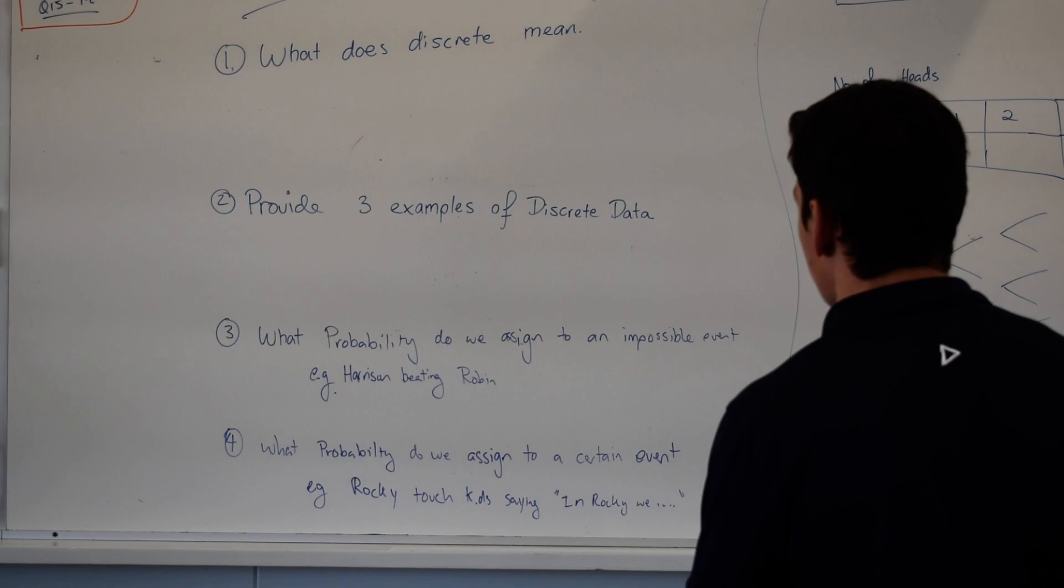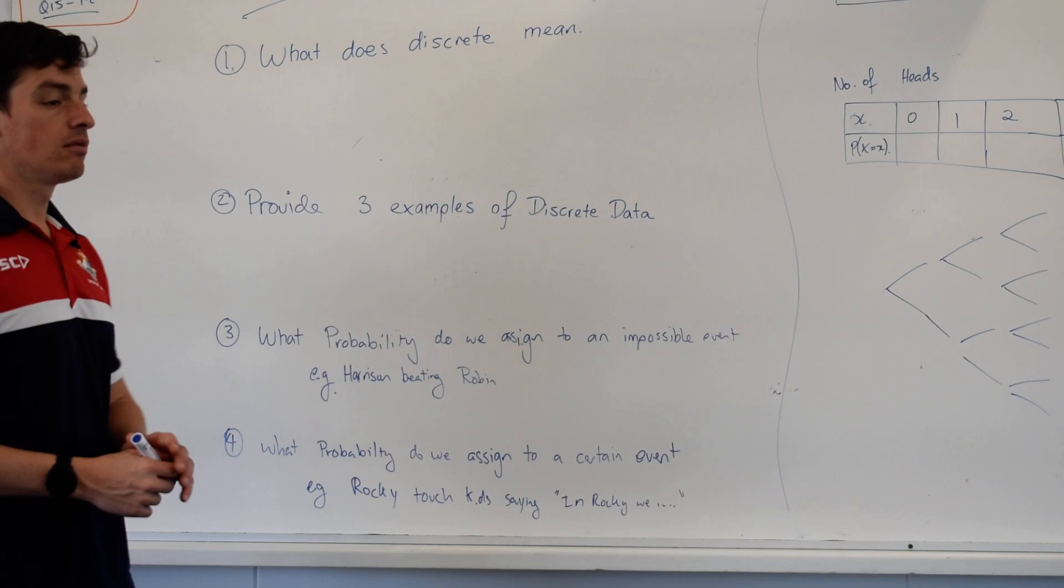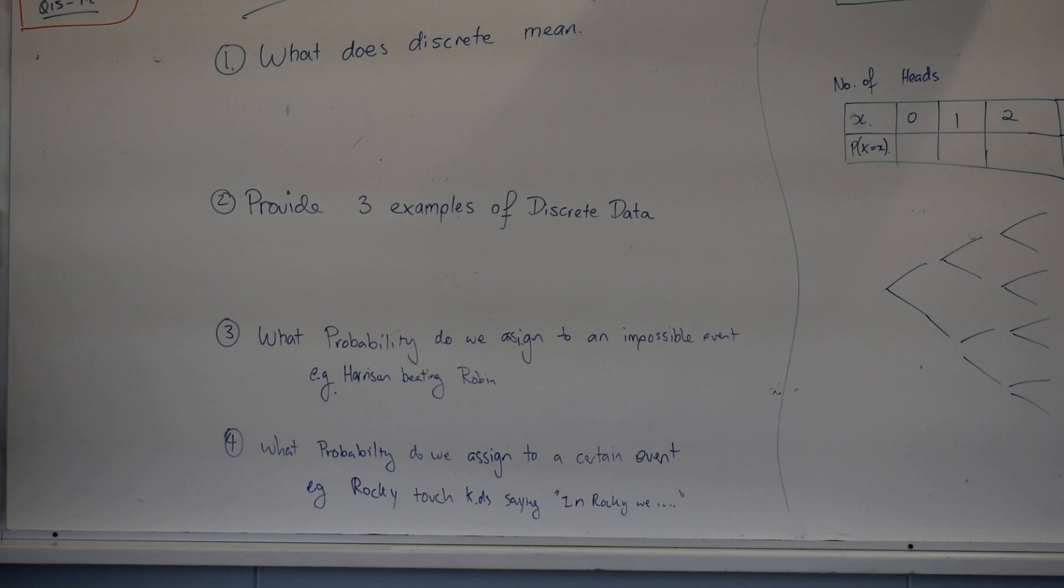All right, so what does discrete mean? Individually separate and distinct. I'll use a different colored pen, but John's got a pretty good example. Individually separate and distinct.